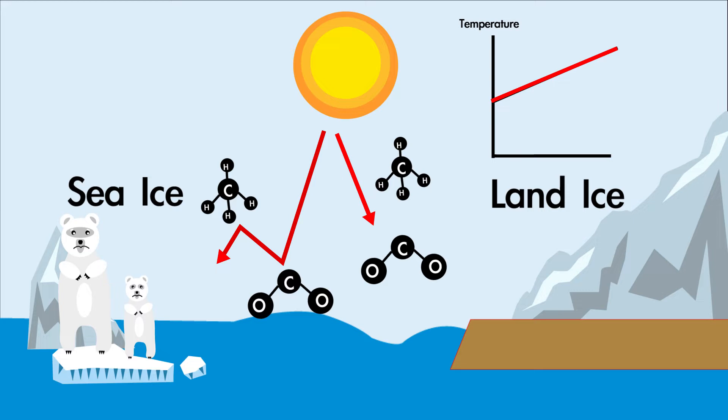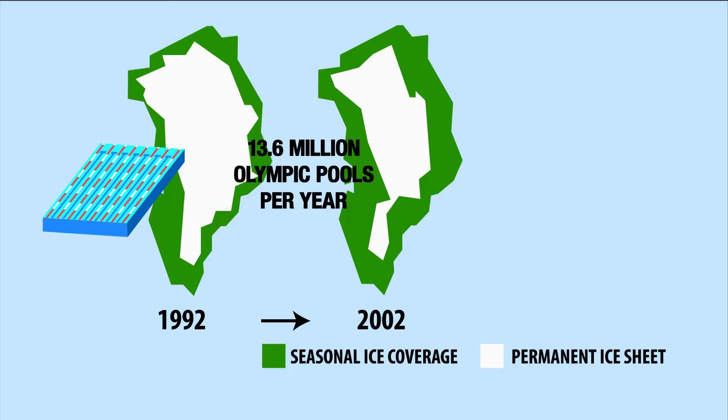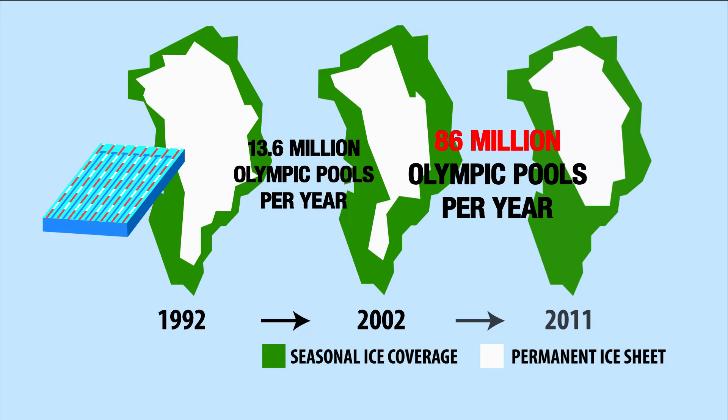Mass loss of the Greenland ice sheet has accelerated since 1992. It has increased from 34 gigatons per year, equivalent to 13.6 million Olympic swimming pools, over 1992 to 2001, to 215 gigatons per year, equivalent to 86 million Olympic swimming pools, over the period 2002 to 2011. The Greenland ice sheet alone has enough frozen water to raise global mean sea level by 6 metres.